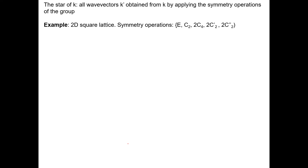Let's see an example using the 2D square lattice. First, let me define the star of K: the star of K consists of all wave vectors K' which are obtained from K by applying the symmetry operations of the group. The 2D square lattice has a total of 8 symmetry operations (H = 8): the identity, two C4 rotations around the main symmetry axis, C2 (= C4 squared), two C2' and two C2'' rotations. In reciprocal space this is a square lattice with Kx and Ky axes.